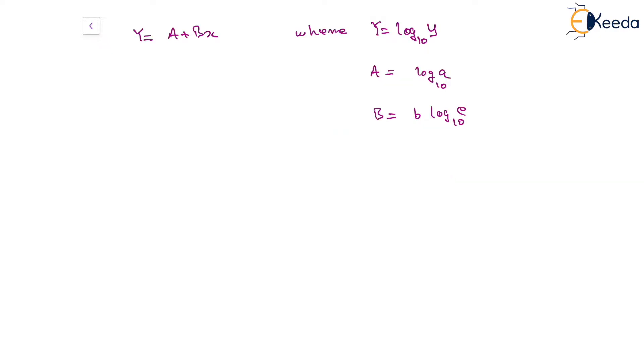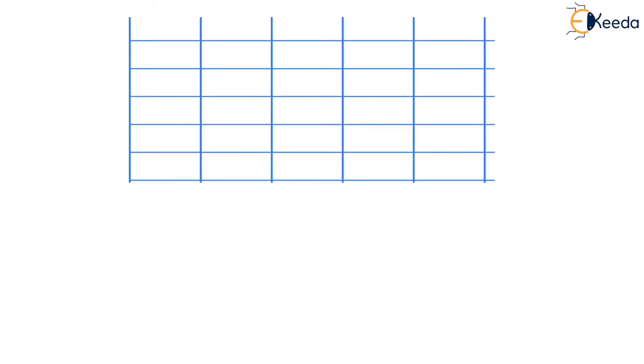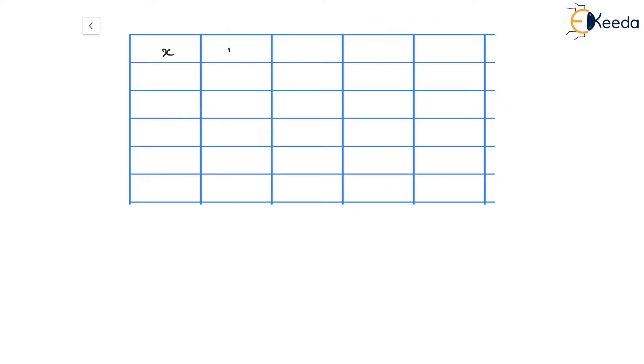And then we may go for the normal equations. Before that, let's try to form a table which will have all the required information. The values we need here are x, y, Y which is log of y with base 10, x square, and x times Y. The entries of x are 0, 1, 2, and 3.